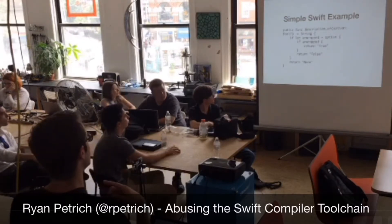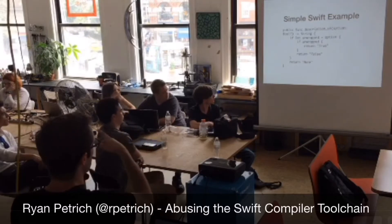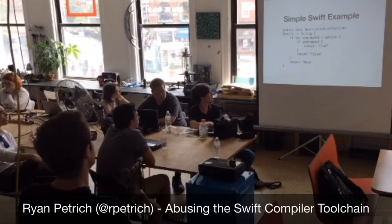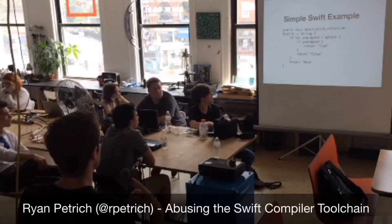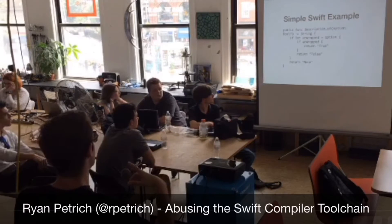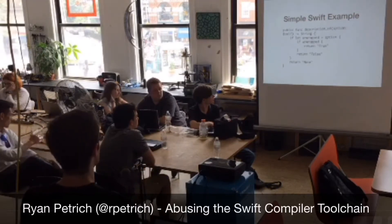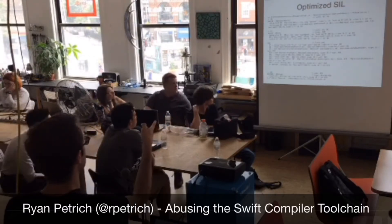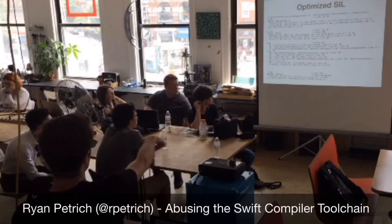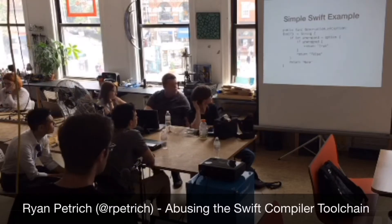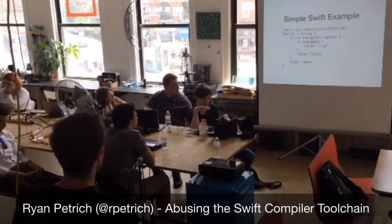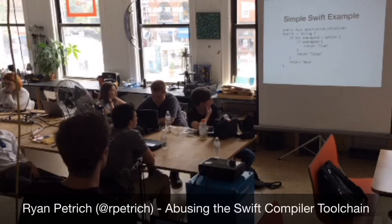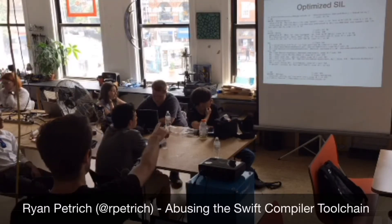Here is a simple Swift example. It's a basic function which takes an optional, and if it has a value, it prints true if it's true, false if it's false, and if there's nothing in the optional, it gives you a framework result. This is the SIL we get from that — the text is really tiny. I've removed some of the basic blocks, so there are five basic blocks for each of the cases. It has to pull the stuff out of the optional, check if there is something in it, check what the value is inside of it, and then do some return. Basic block five is where we return.